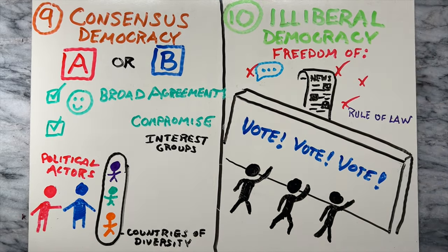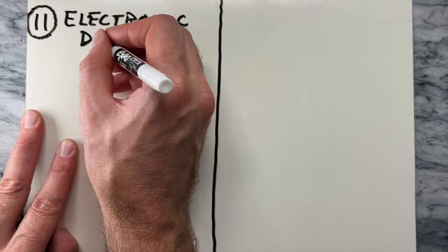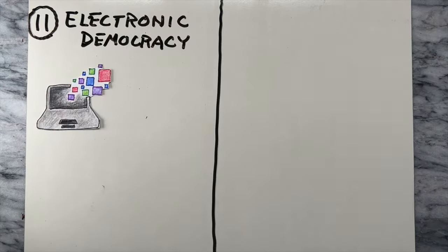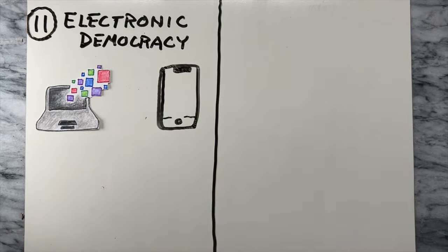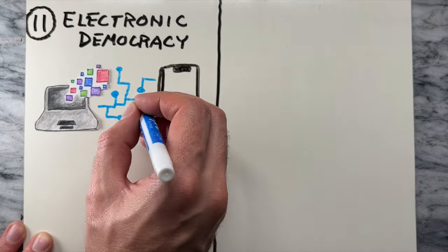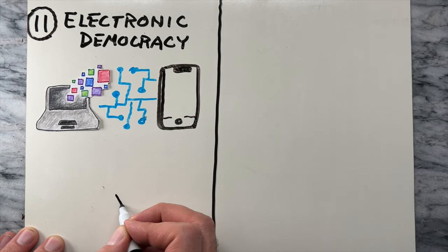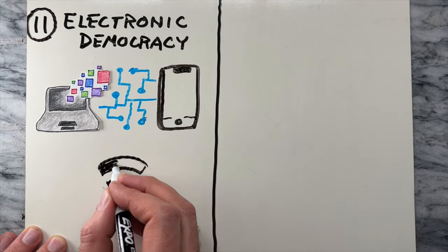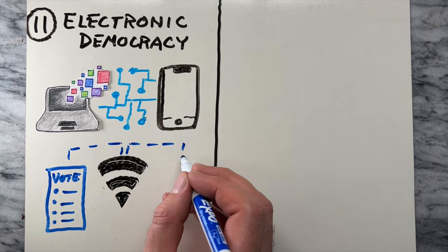Next, there's electronic democracy or e-democracy. This involves the use of digital technology, such as the internet and electronic voting systems, to enhance citizen participation and decision-making processes.